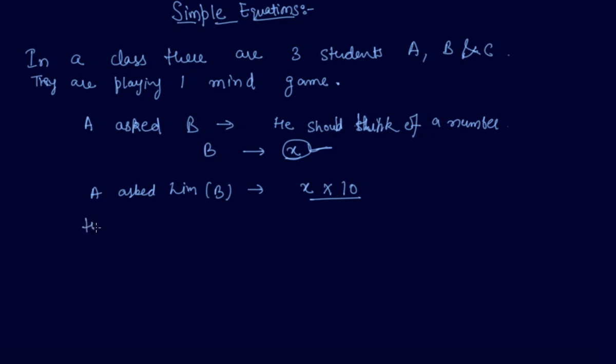Then A asked him to add 20 to this number. So what B did - they don't know what is going on each end. A is giving the statement and B is doing whatever A is saying to him.